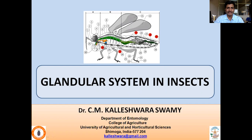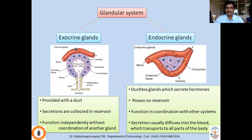One such gland which we have already studied is the salivary gland, which possesses ducts — so these are exocrine glands. Insects possess both exocrine glands as well as endocrine glands. Exocrine glands possess reservoirs; their secretions are poured into a reservoir and released to the exterior through ducts. Endocrine glands do not possess ducts or reservoirs, so their secretions are directly mixed with the blood and transported to different parts of the body.